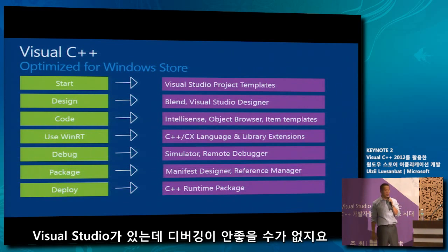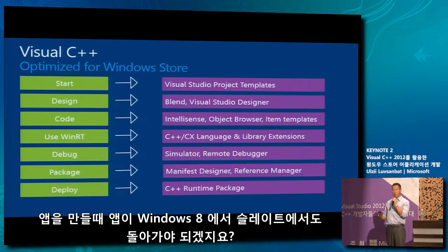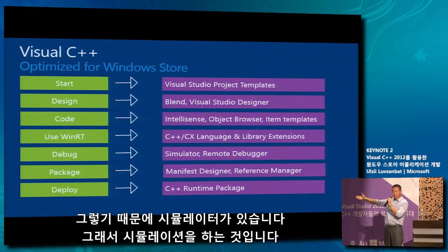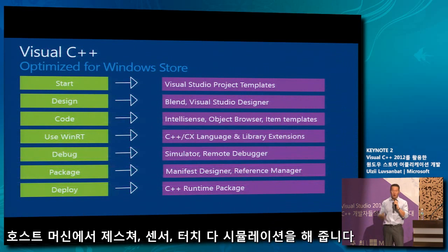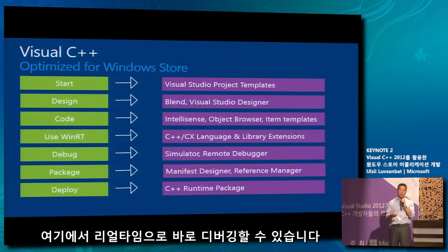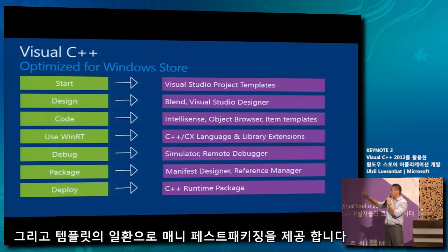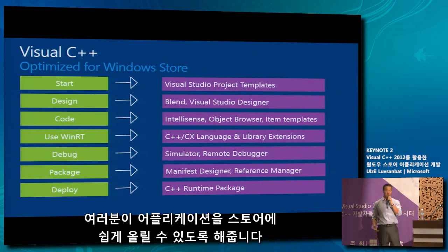As well as debugging — how can you have Visual Studio without a good debugging story? When you need to make sure your application runs on Windows 8 as well as Windows 8 Slate, the new Surface or Samsung Slates, you're not going to have all those devices available to you. There's a simulator that simulates all the gestures and sensors of a device on your host machine, so you can debug it real-time right there. And if you have the devices handy, you can always do remote debugging. As part of the template, we also provide manifest packaging information so it's easy to deploy your application to the store.